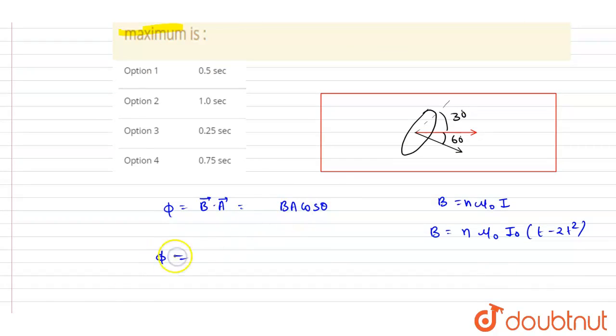So you can see in the flux expression, if you put the value of θ as 60 degrees, everything else is constant. If you put the value here, I₀, B, A, cos 60, these all are constant.